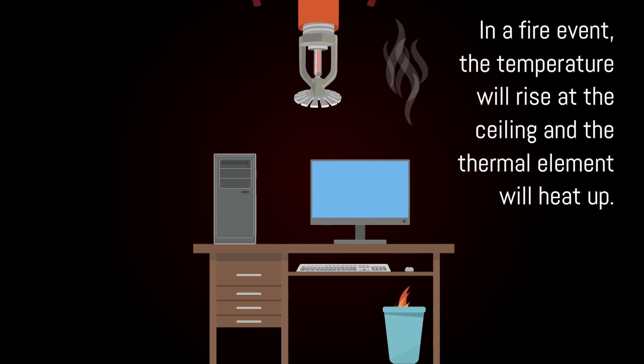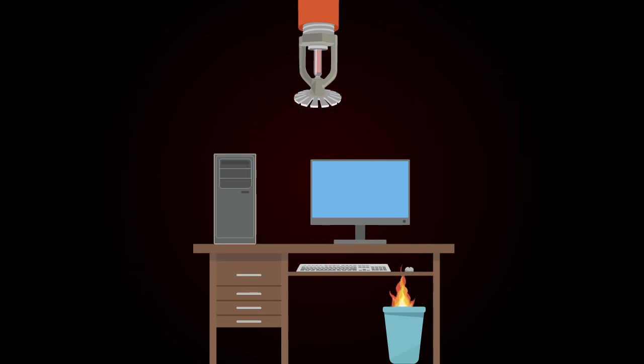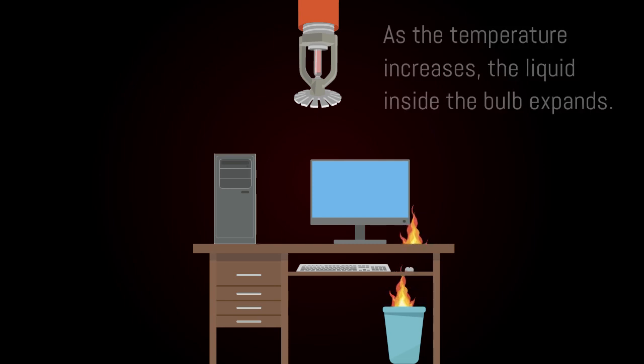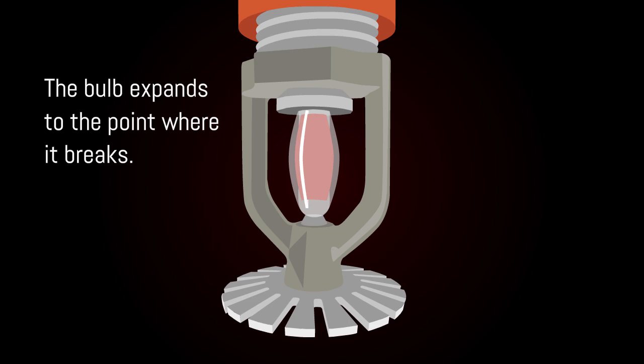In a fire event, the temperature will rise at the ceiling and the thermal element will heat up. As the temperature increases, the liquid inside the bulb expands. It expands to the point where the bulb breaks.